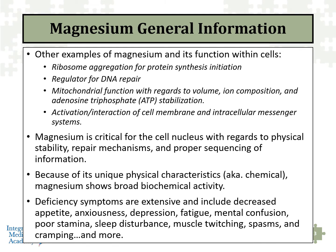There are some other examples of magnesium and its function within our cells. It helps in the regulation of DNA repair, in what's called ribosome aggregation — ribosomes are important for protein synthesis. It helps in mitochondrial function with regards to its volume, the ion composition, and most importantly, which I'll show you here shortly, is adenosine triphosphate stabilization.